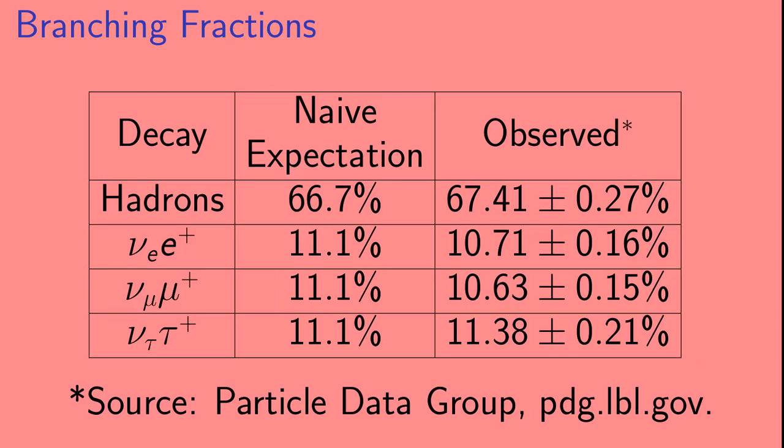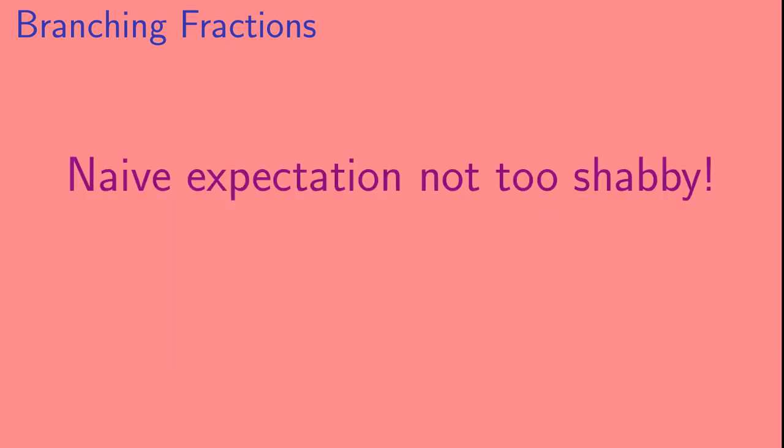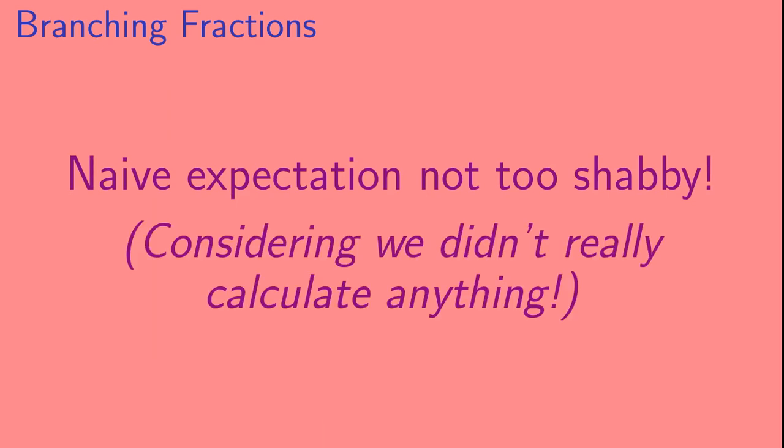Here we see our naive expectation and the measured result for the branching fraction for W plus decaying to hadrons, nu E E plus, nu mu mu plus, and nu tau tau plus. Our naive expectation is good to a few percent. So, our naive expectation is not too shabby, especially considering that we really didn't calculate anything.